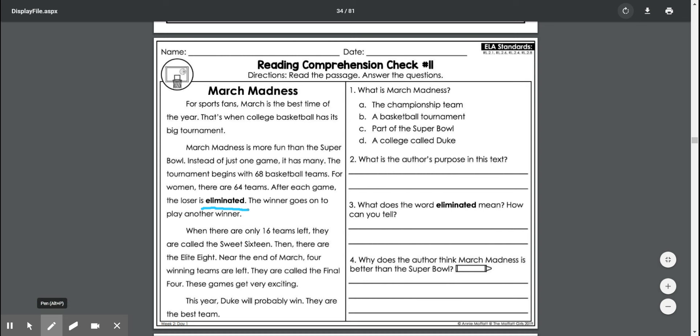Okay, here we go. When there are only 16 teams left, they are called the Sweet 16. Then there are the Elite 8. Near the end of March, four winning teams are left.